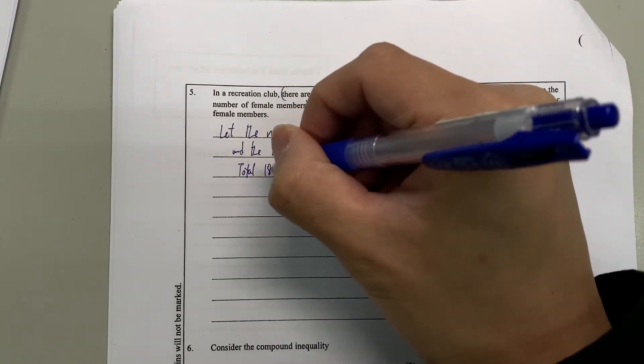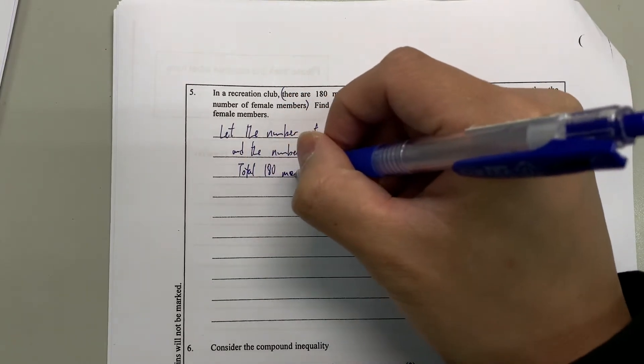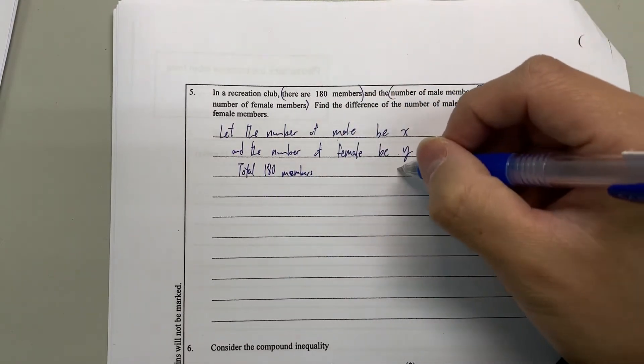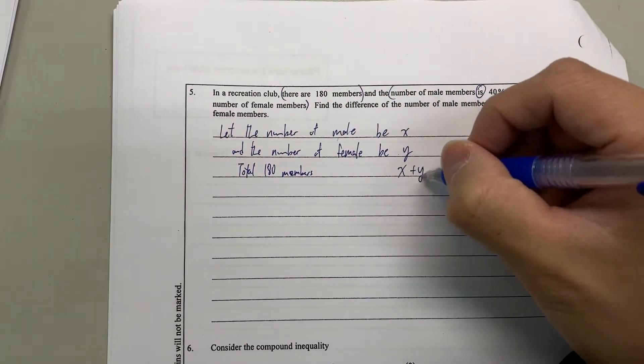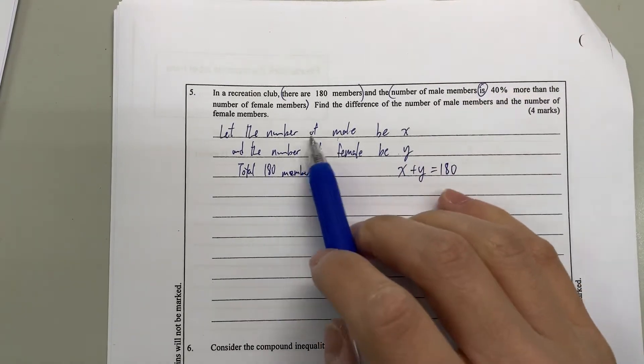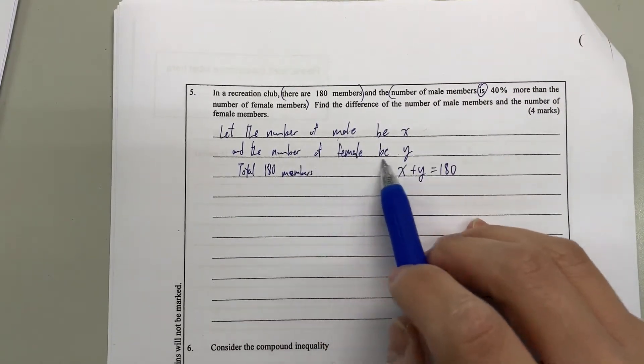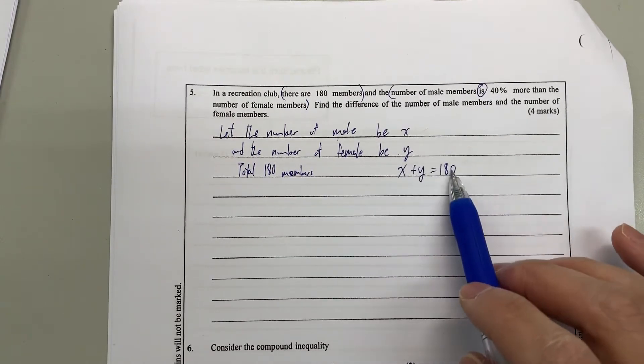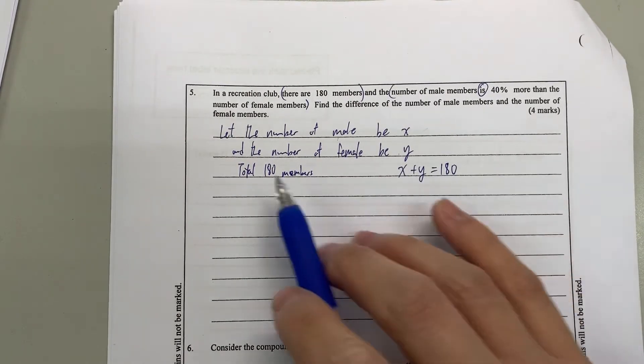Total 180 members. So that means x plus y equals 180. We let the number of male be x and the number of female be y. So male plus female in total we have 180 members. This is the first sentence.